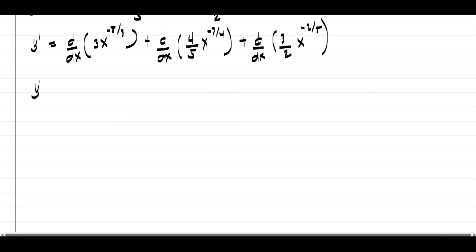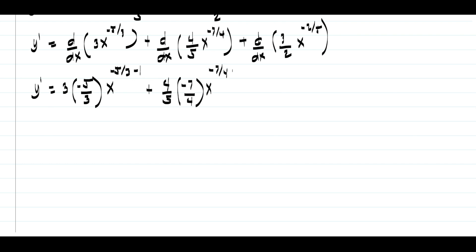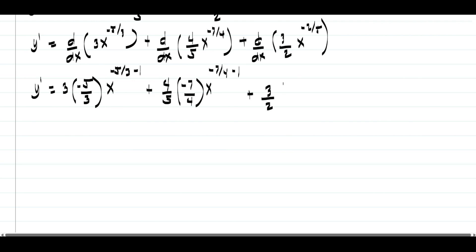To find the derivative, y prime equals: multiply 3 by negative 5/3, giving 3 times negative 5/3 times x raised to negative 5/3 minus 1, plus 4/5 times negative 7/4 times x raised to negative 7/4 minus 1, plus 3/2 times negative 2/5 times x raised to negative 2/5 minus 1.